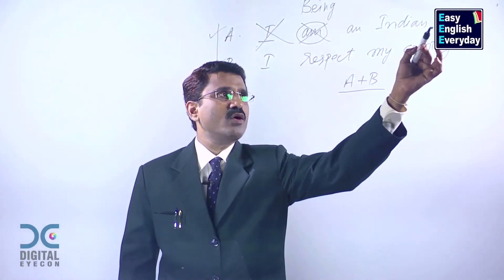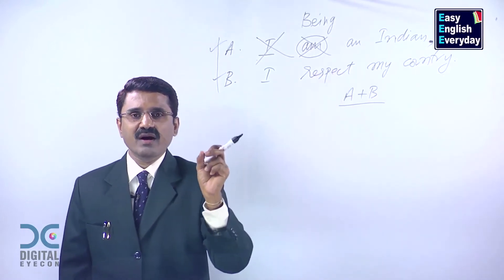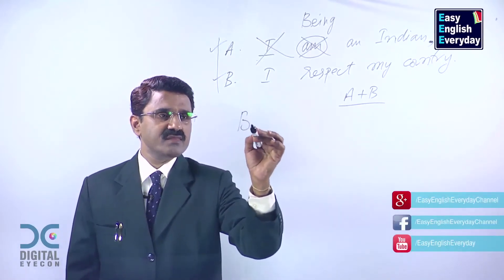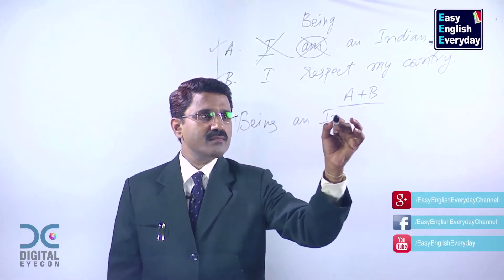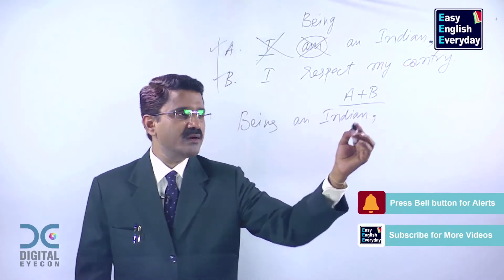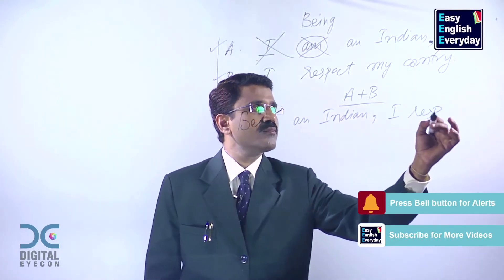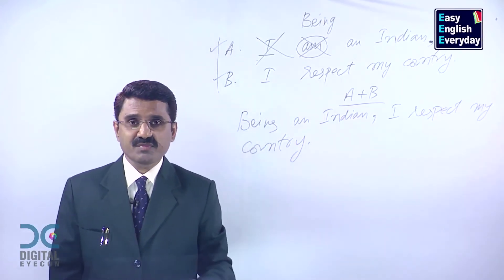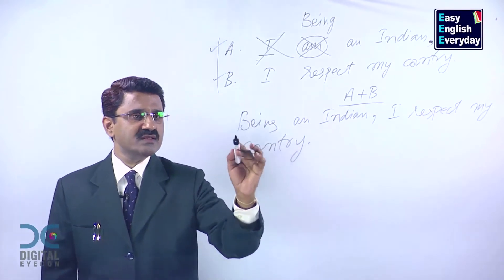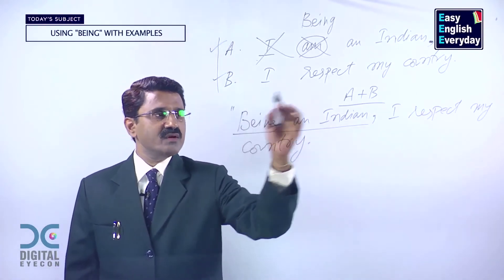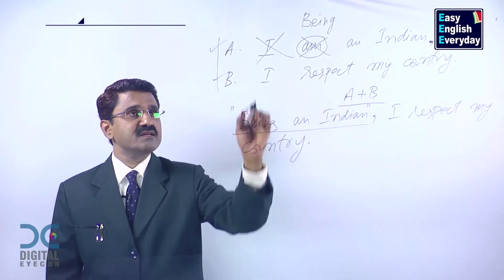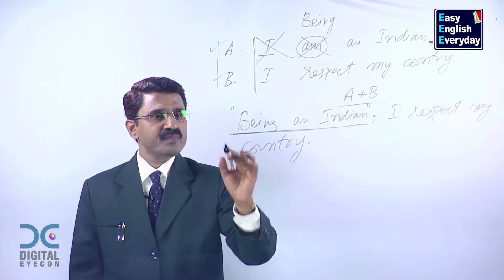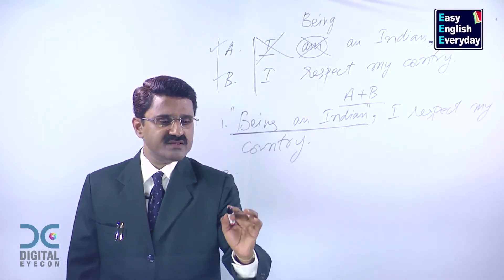The result is: 'Being an Indian, I respect my country.' A comma indicates you have to take a brief pause there. So the sentence is written as: Being an Indian, comma, I respect my country. It's very simple. I have explained to you what the circumstances are — the background information of 'being an Indian,' how it enters the sentence and why it enters the sentence. Under such circumstances, 'being' enters the sentence.